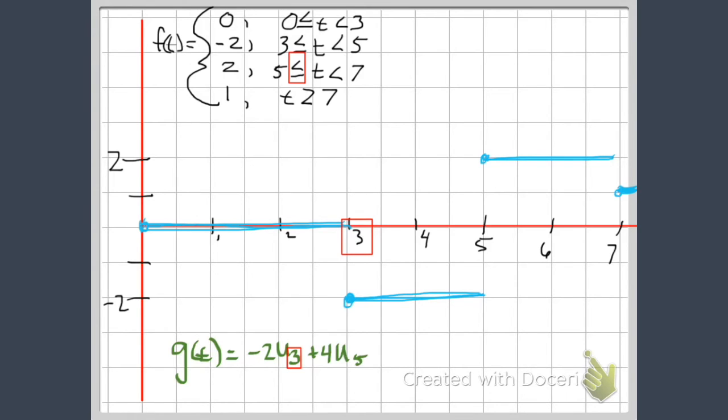And then we get to our next action number here at five. So how are we going to get from minus two to positive two? We're going to add four. That's why we're doing four times the unit step. And it adds to the previous sum.